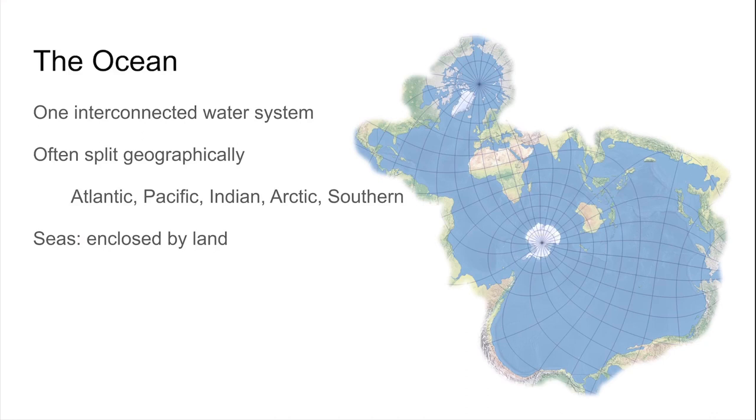The Indian Ocean, which lies between Africa, the Indian subcontinent, Indonesia, and Australia. The Arctic Ocean, which is far to the north, above Canada and Russia. And the southern ocean, which is around the southern continent of Antarctica.